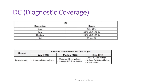The DC classification is: less than 60% is 'None'; between 60% and 90% is 'Low'; 90% to 99% is 'Medium'; and 99% or more is 'High'. For example, for the power supply element, under- and over-voltage is classified as 60% or Low. Voltage drift and oscillation is considered Medium, and power spikes or surges in the power supply are considered High.